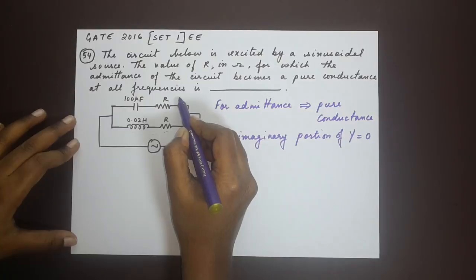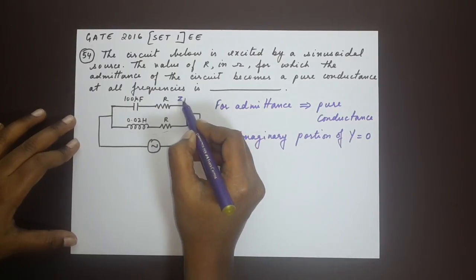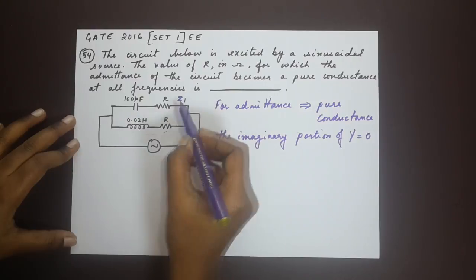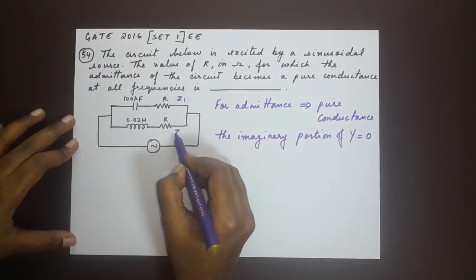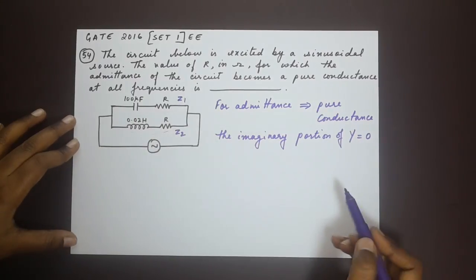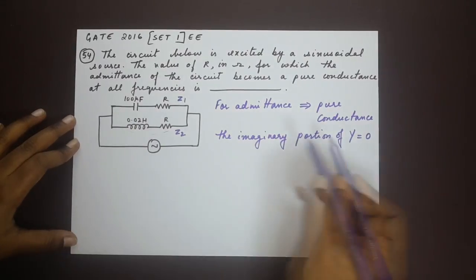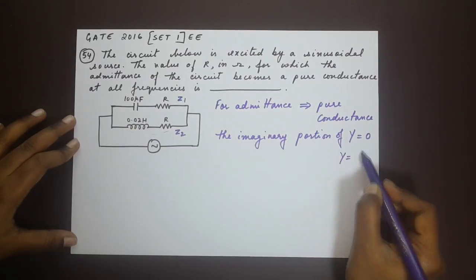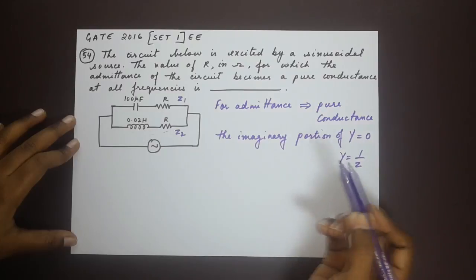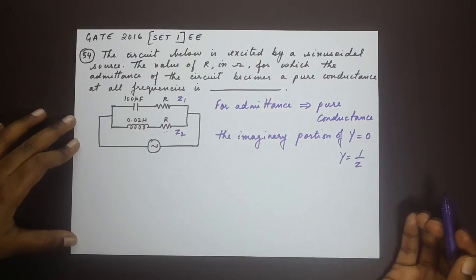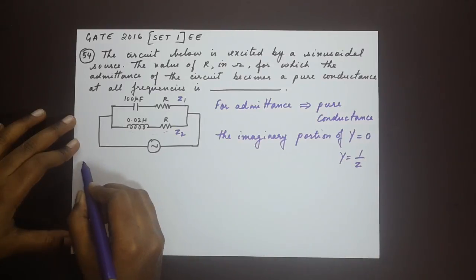Let me call z1 to be the impedance of this branch here and z2 to be the impedance of this branch here. Since we know that y is equal to 1 by z, for me it is easier to write it in terms of impedance and then take the reciprocal of that and write it in terms of admittance.